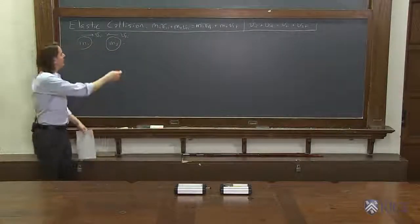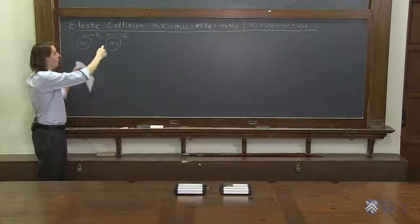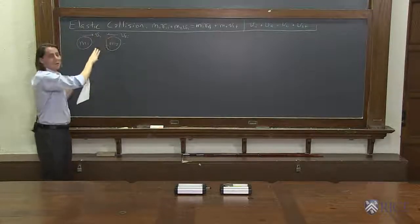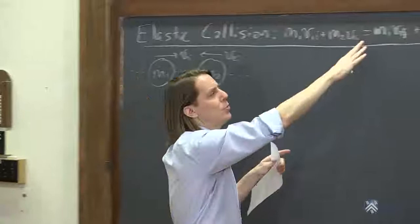So we just worked out for an elastic collision with two different masses approaching each other at different velocities. We have an elastic collision where we conserve energy. We came up with these two equations.